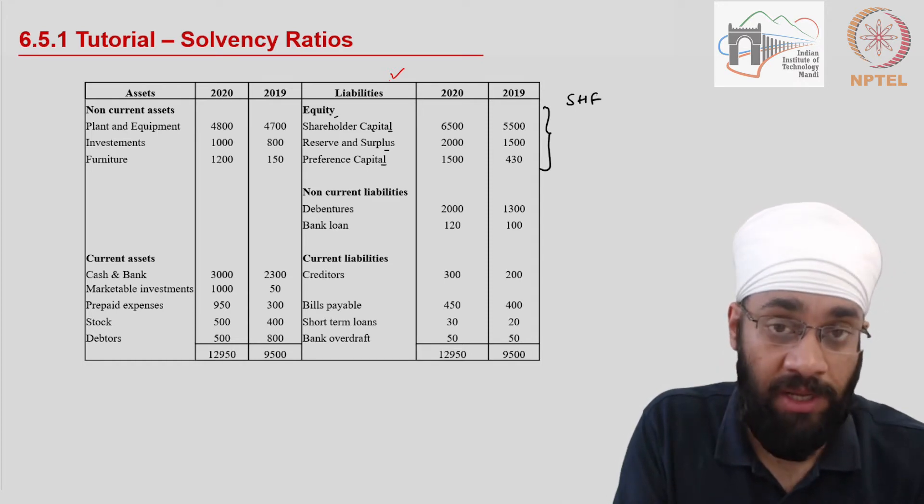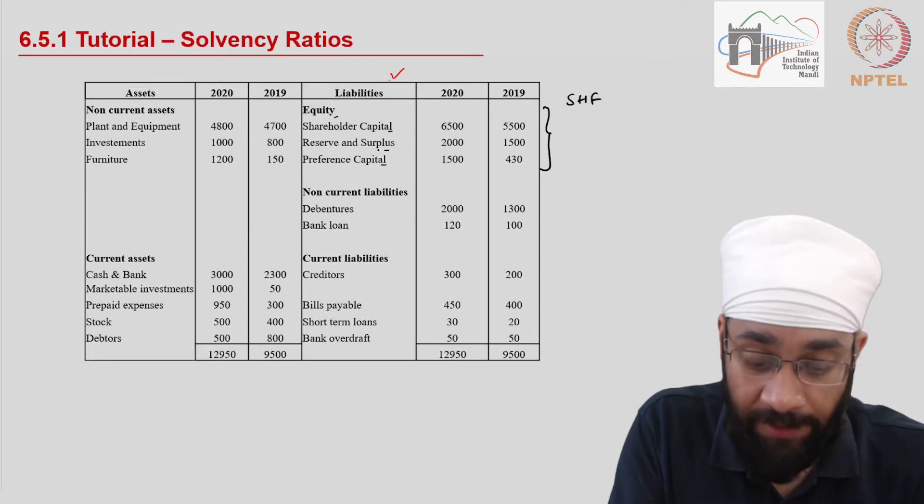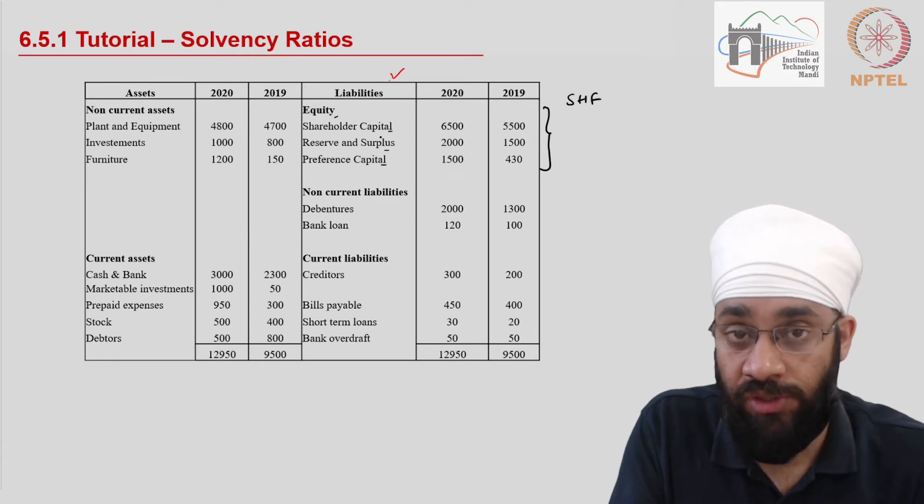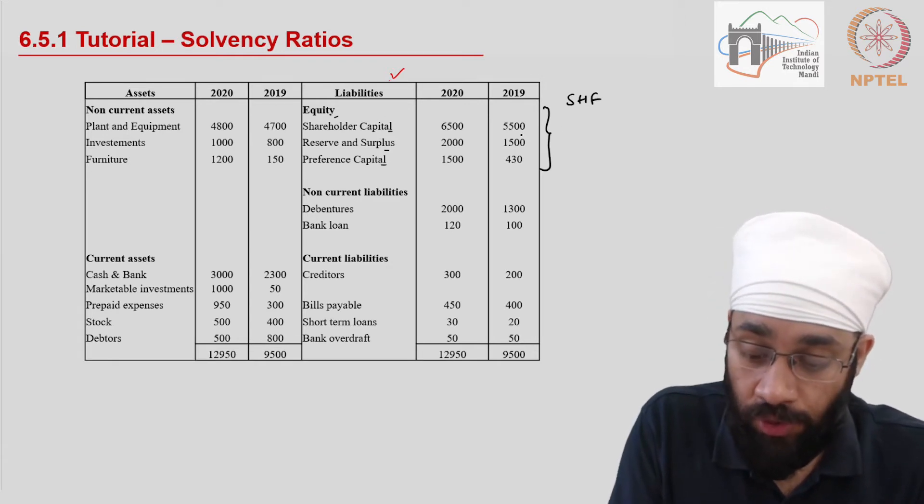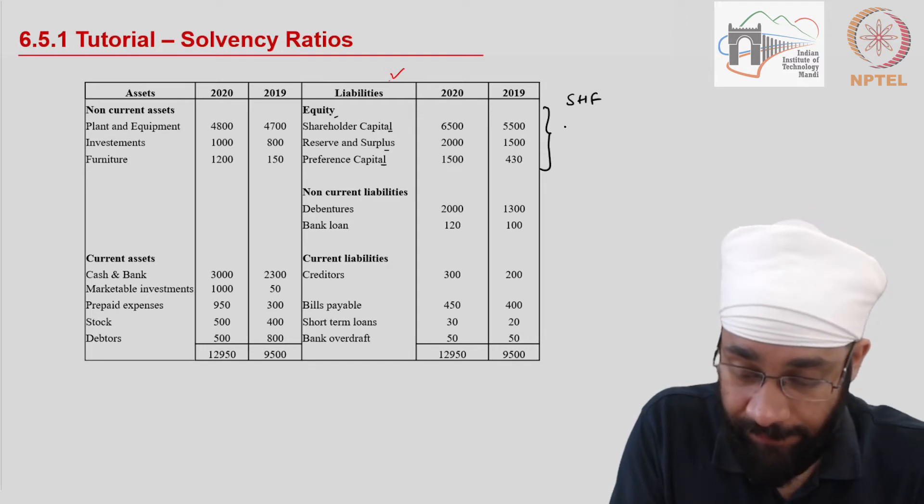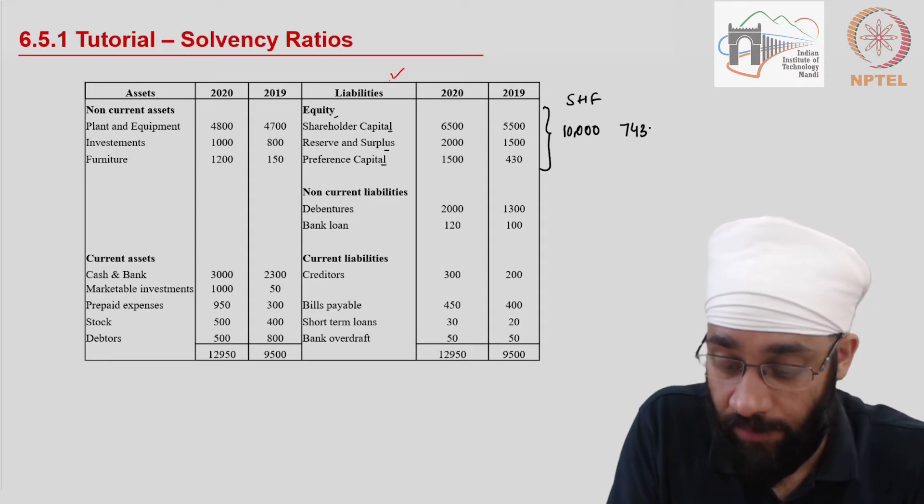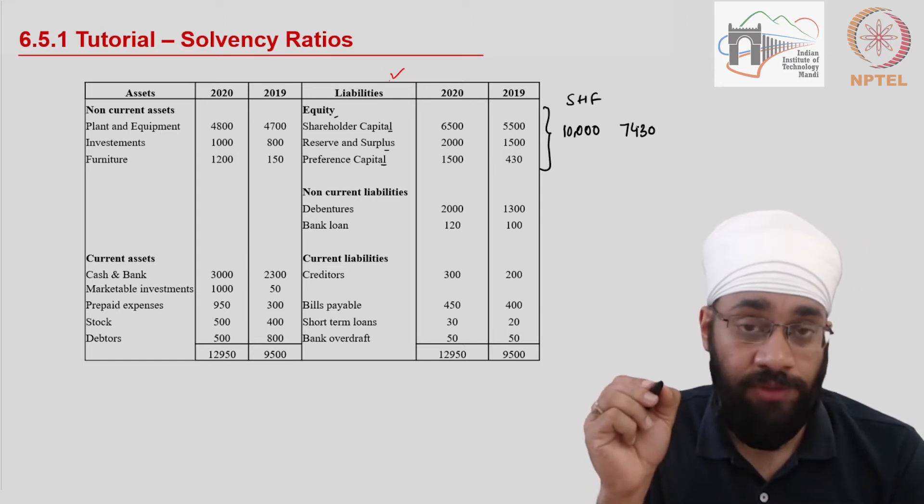Preference capital and the common capital both are the shareholders in the business. So the total comes out to be 8510000 in 2020 and you have 6000, 7000, so 7430 in 2019.